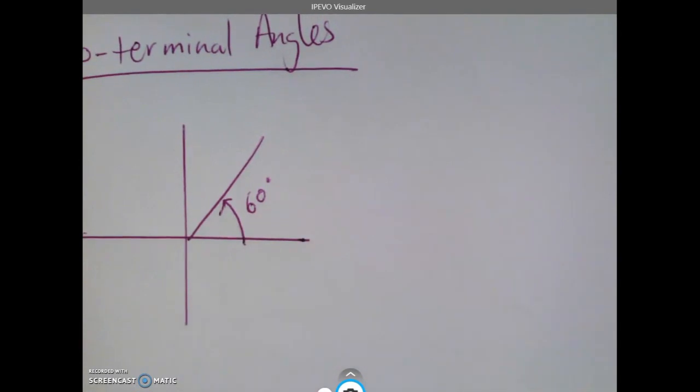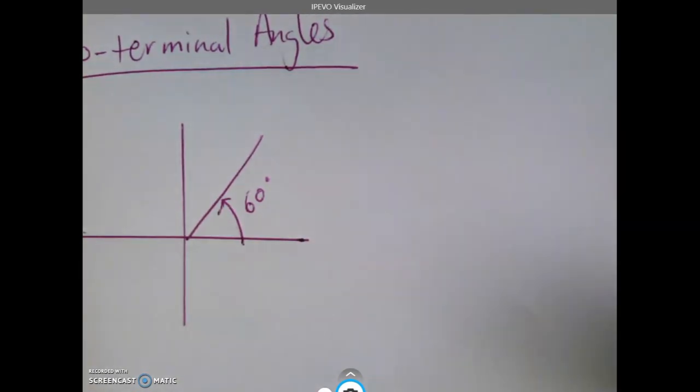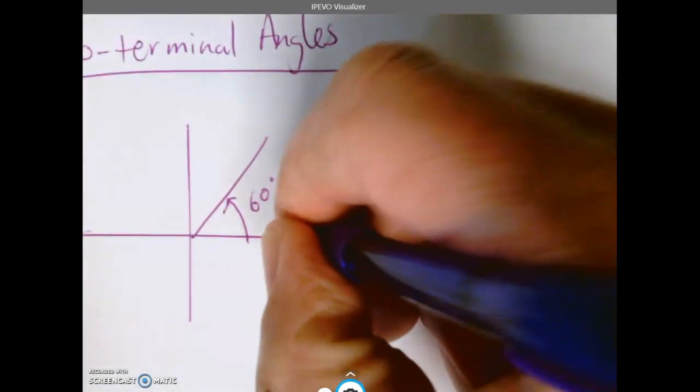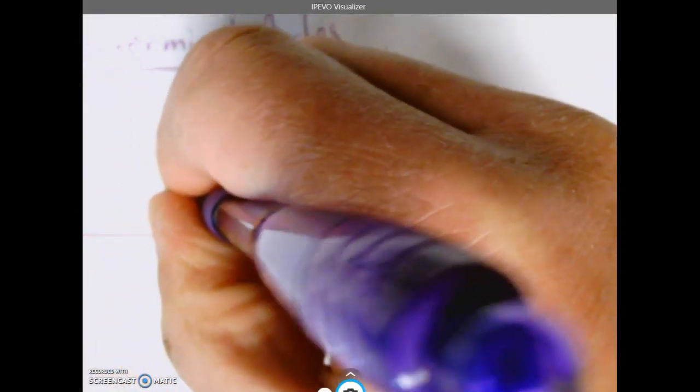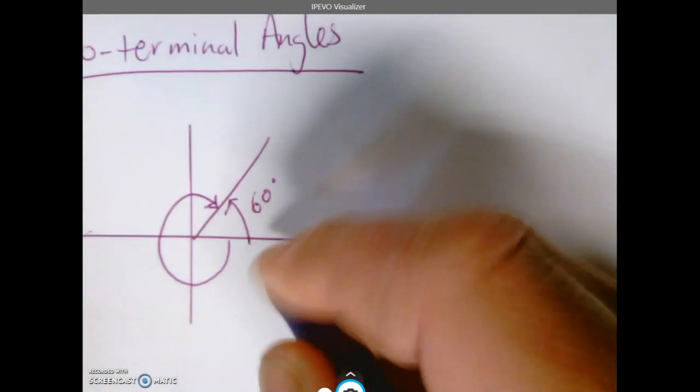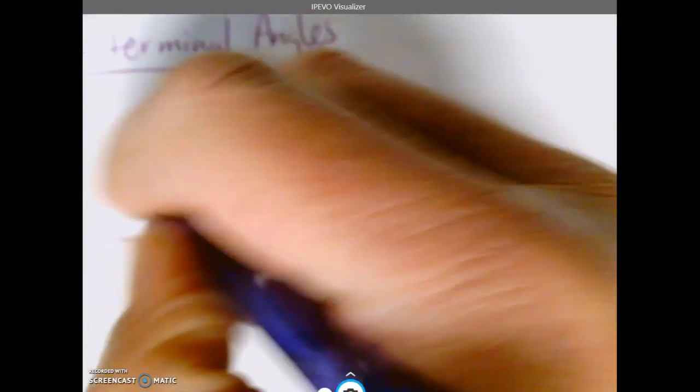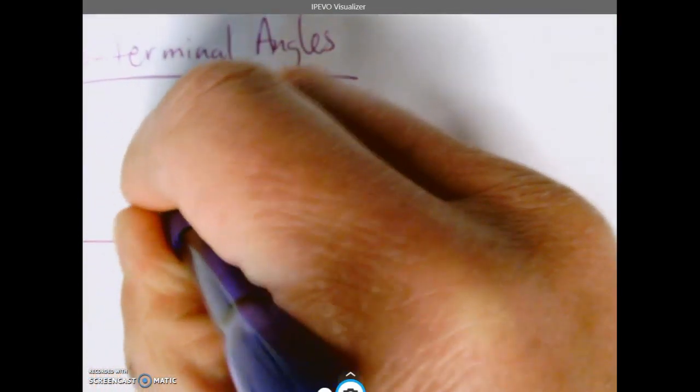Well, think about 360 degrees in a circle. So if I went around the back side - there's 360 total - instead of going 60 this way, I could go around the back side and go negative 300 degrees.